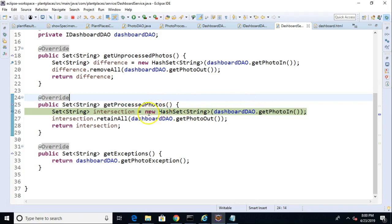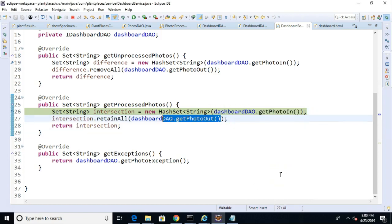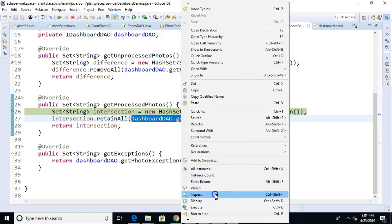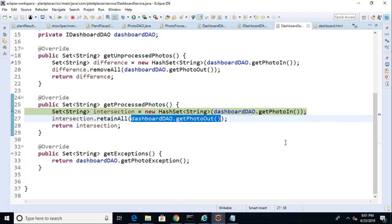So let's see what we have. We have a hash set called photo in, or get photo in. Do a quick inspection on this. And you'll see that it has one element in it. Photo in has one element. Now let's take a look at photo out. Again, a quick inspection on this. You see, this one has no elements because at the current time, we have not processed anything.